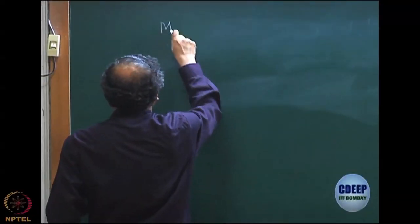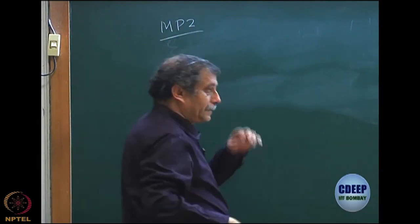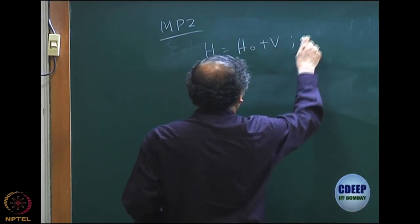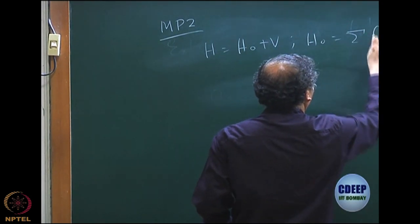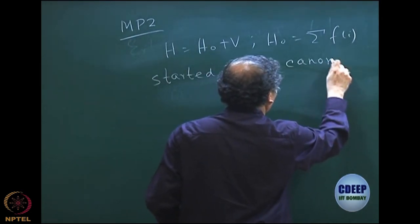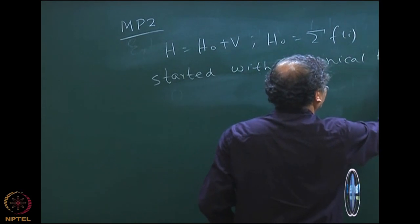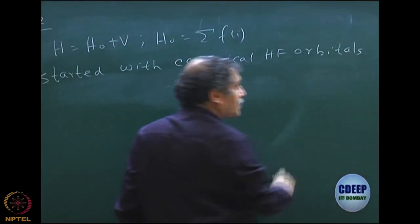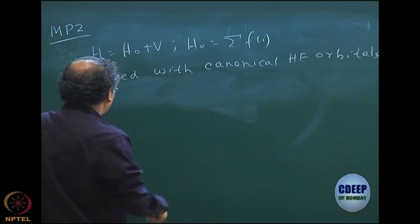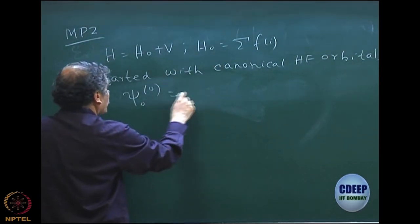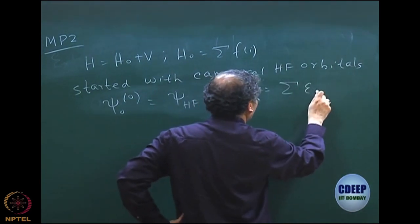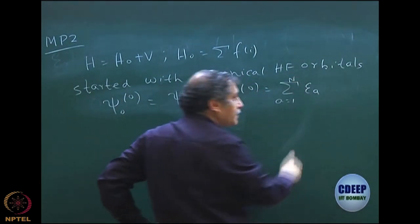We did what we are calling Møller-Plesset second order. We divided H equal to H naught plus V, where H naught was the sum of the Fock operator, with Hartree-Fock orbitals as the starting point — the eigenfunction of H naught. So basically our psi-0,0 is the sum of the orbital energies, using A as an index for occupied orbitals.